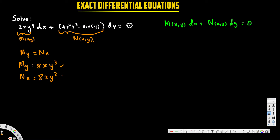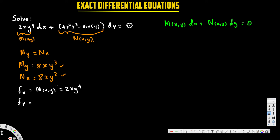Both partial derivatives are equal — 8xy³ — so this is confirmed to be an exact differential equation. Now we set up two equations: the partial derivative of f with respect to x equals M(x,y), which is 2xy⁴, and the partial derivative of f with respect to y equals N(x,y), which is 4x²y³ − sin(y).